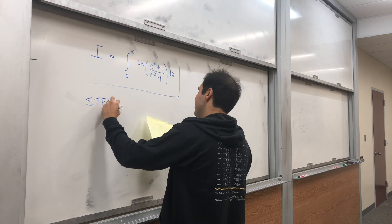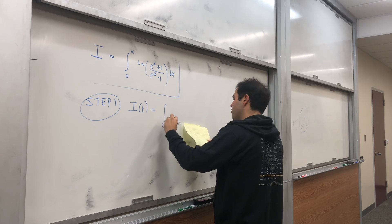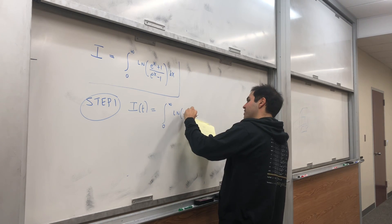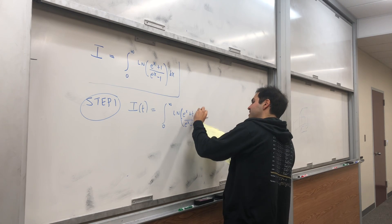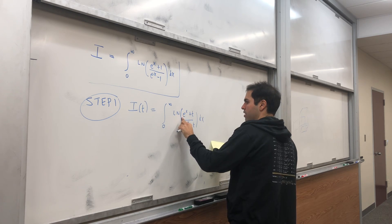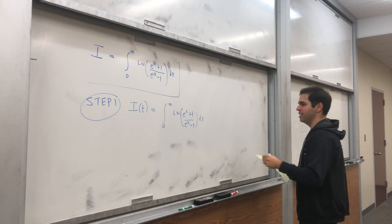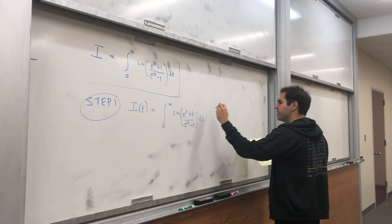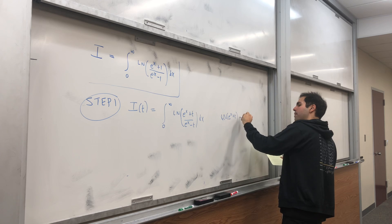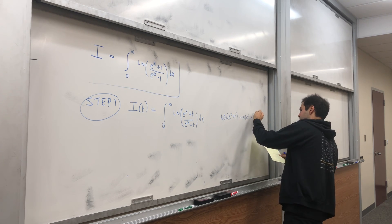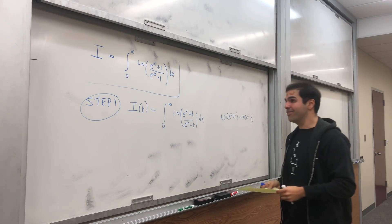Instead of considering this integral directly, let's consider the following: I(t) is the integral from 0 to infinity of ln of (e^x + t) over (e^x - t) dx. Notice we integrate with respect to x, so in the end you should have a function purely of t. And notice this is just ln(e^x + t) minus ln(e^x - t), which we can differentiate with no problem.